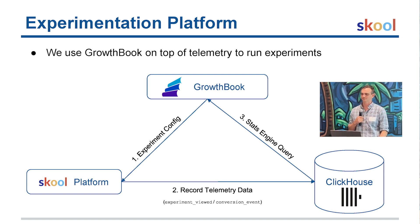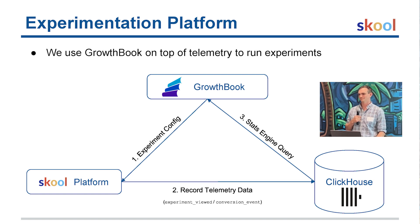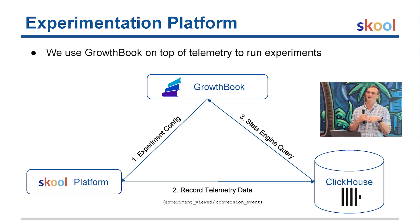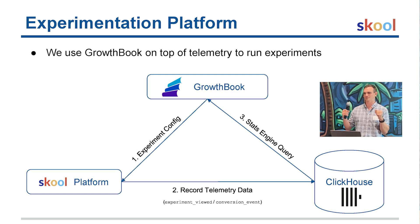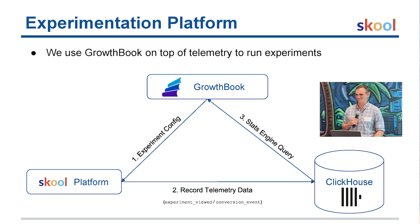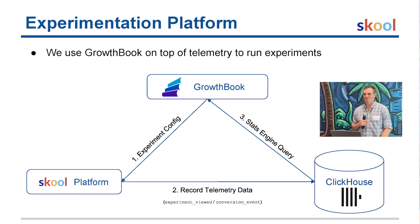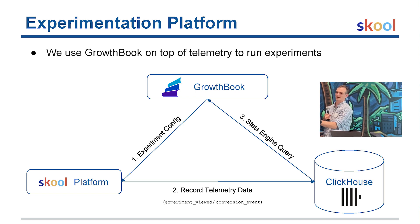Regarding users who saw multiple variants: we're not preventing user behavior in real time. Bucketing happens in real time, but all analysis happens after the fact. We include users who are a pure test case — they saw only one variant and either did the action or not. If someone saw the experiment on mobile and then on desktop and we linked those identities together, we just exclude them from the experimental analysis. They're not seeing anything wrong; we're just filtering them out data-wise. We bucket in real time, but all the analysis happens at the back end.